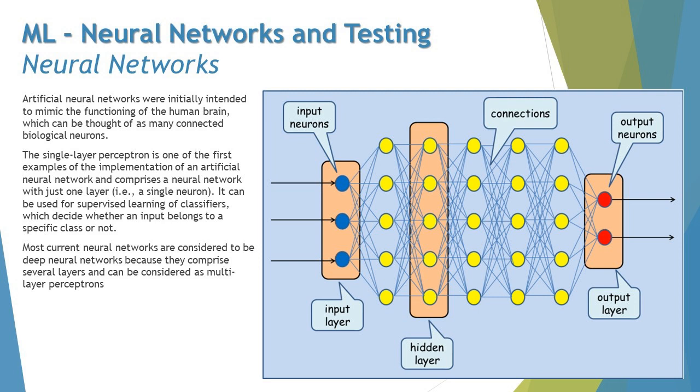The single layer perceptron is one of the first examples of the implementation of an artificial neural network and comprises a neural network with just one layer—that is, single neuron. It can be used for supervised learning of classifiers, which decides whether input belongs to a specific class or not. Now let me just try explaining you a bit about this.